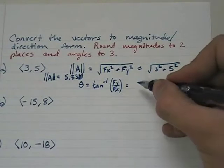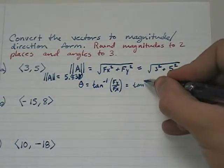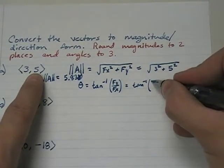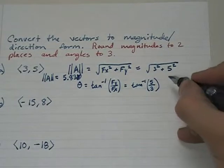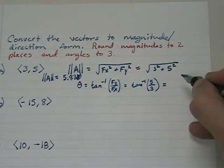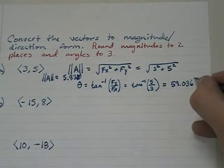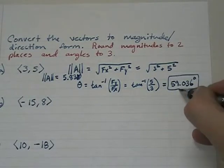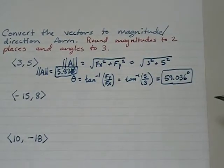So the inverse tangent of the y component over the x component will be the inverse tangent of five-thirds. And when we do that, we get 59.036 degrees. So the magnitude is 5.83 and the direction angle is 59.036 degrees.